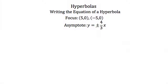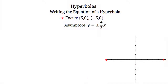Whenever you deal with conic sections, it's usually easier to sketch a graph of what's going on first. Our foci are the points (5, 0) and (-5, 0). Our asymptotes are the lines y equals plus or minus four-thirds x. Since our foci are on the x-axis, that makes the x-axis our transverse axis.